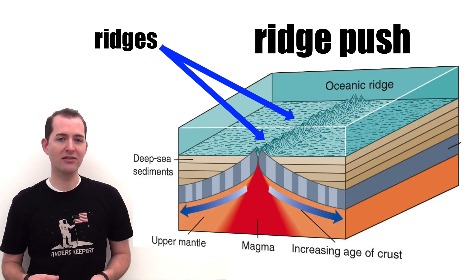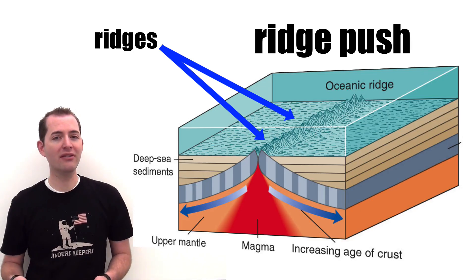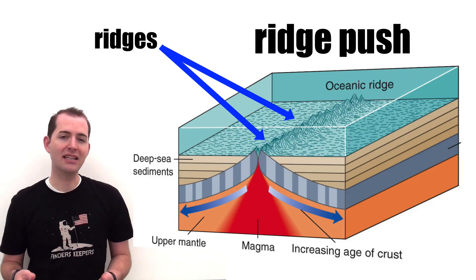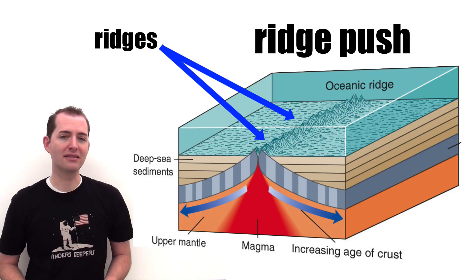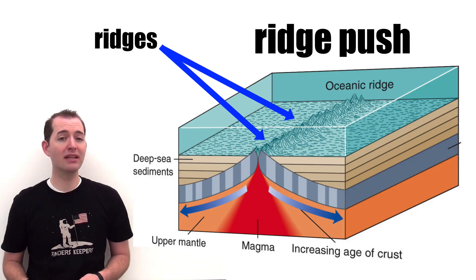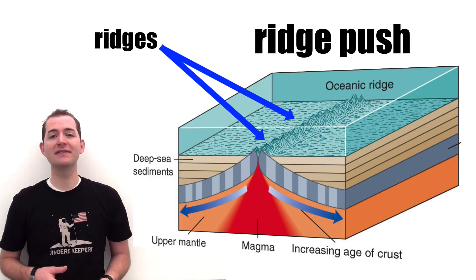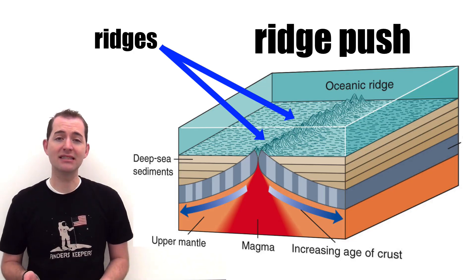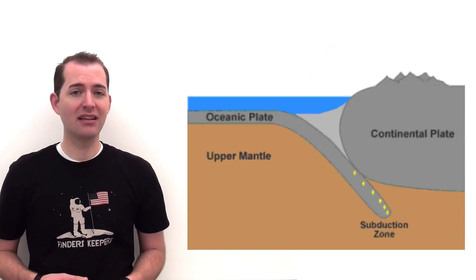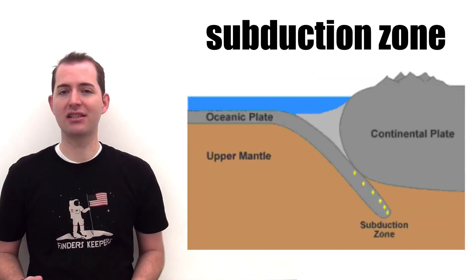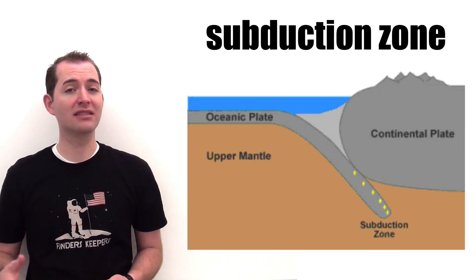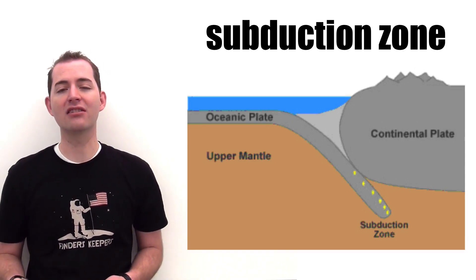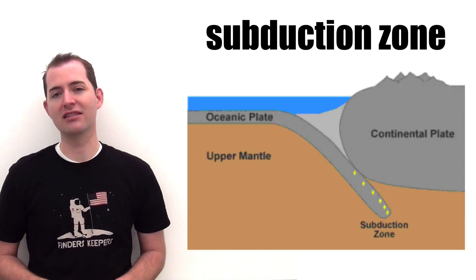As the newly formed lithosphere continues to move away from the divergent boundary, it continues to cool. This makes it become more and more dense. Eventually it becomes more dense than the asthenosphere below it, which causes it to sink into the asthenosphere. And when one plate sinks beneath another, it's known as a subduction zone. This typically happens where continental crust, which is less dense than oceanic crust, meets oceanic crust.